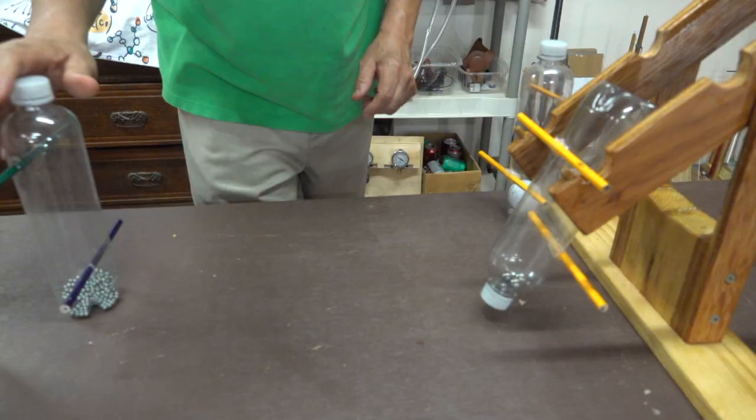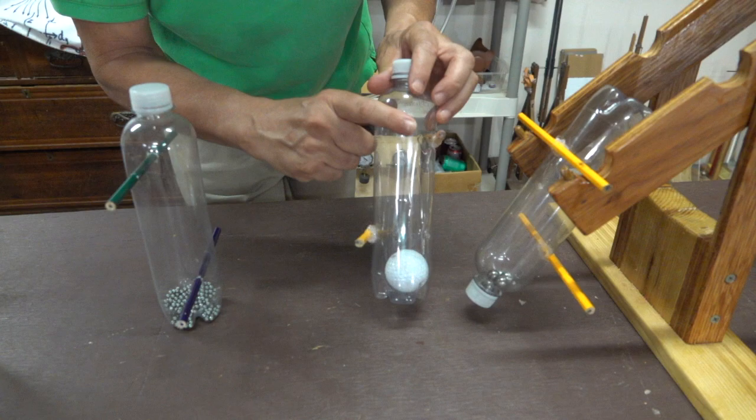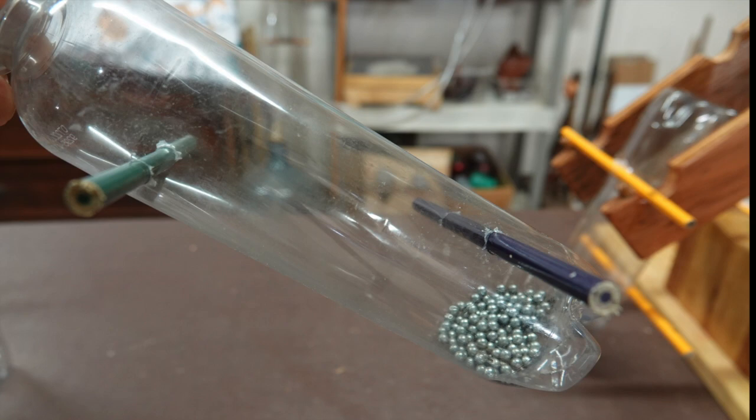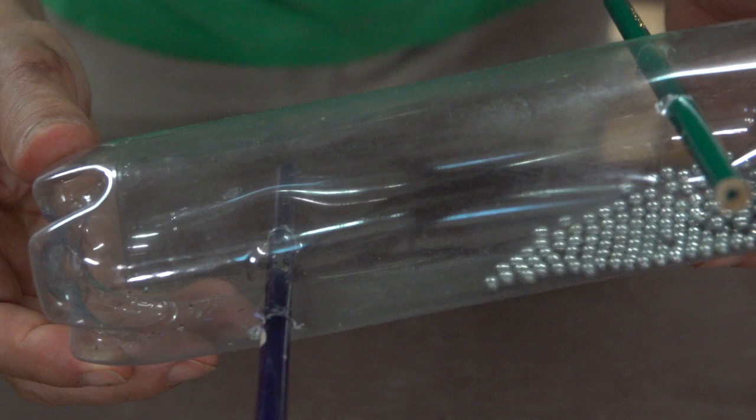This next tumbler has two changes. I move the axles from the outside of the bottle to inside the bottle. And I also replace these smaller balls with these BBs.